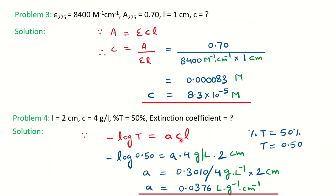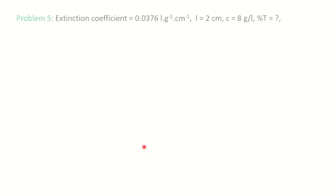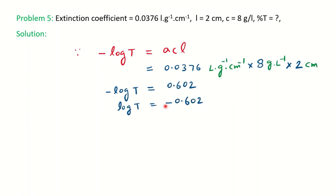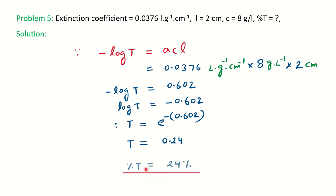So whatever data is given, you can calculate the required quantity using the same formula — whether they ask for concentration C, absorptivity 'a', or absorbance A. In this problem, they give you the data and ask you to calculate the percentage transmittance. Since concentration is in grams per liter, use A = aCL. Put in the data and calculate to find the percentage transmittance is 24%.